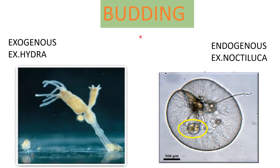Budding is another mode of asexual reproduction where the parent body produces one or more buds and each bud grows into a new individual. If the bud grows outside on the outer surface of the parent body, as seen in hydra, it is called exogenous budding. If the buds are formed inside the parent body, as seen in noctiluca, where each bud gives rise to a new individual inside, it is called endogenous budding.